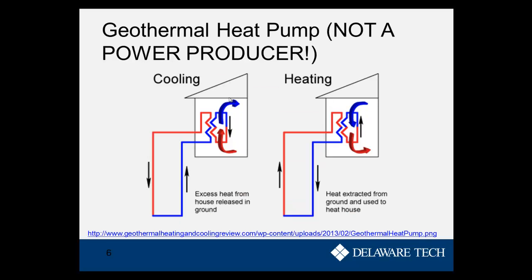One common misconception with geothermal is the geothermal heat pump. A geothermal heat pump is a way to save energy, but is not an energy producer. What it does is use the ground as a heat sink or heat source. When we're running the air conditioner and cooling, we take heat from the house and reject it outside — normally to the outside air. But it's hard to reject heat when it's 95 or 100 degrees outside. The ground maintains a constant temperature, usually between 50 and 60 degrees in this area, all year round.